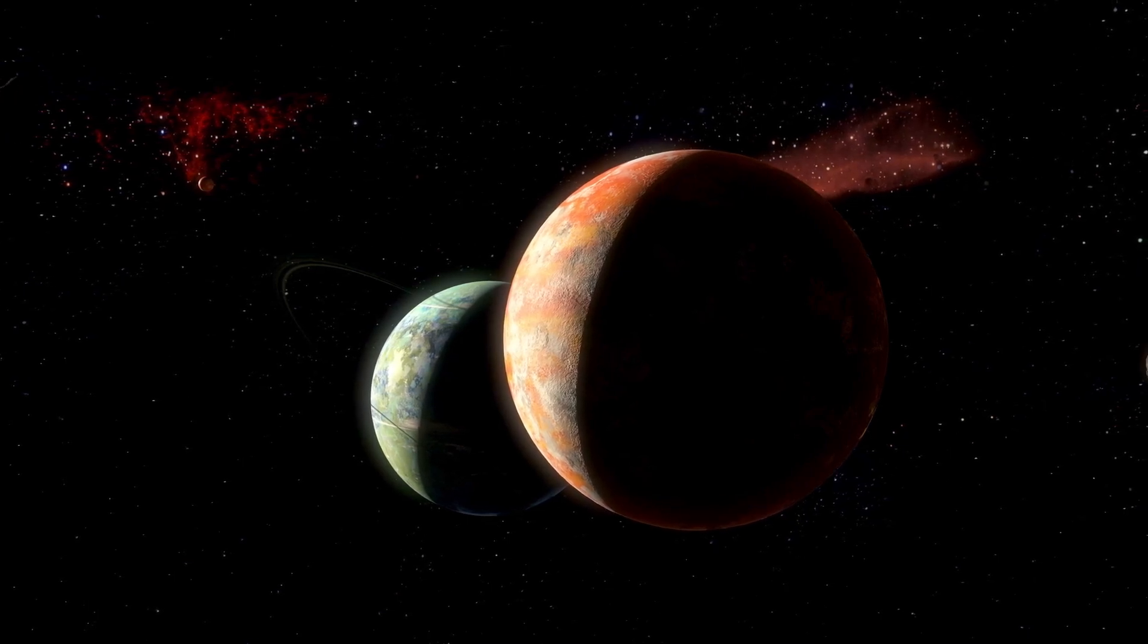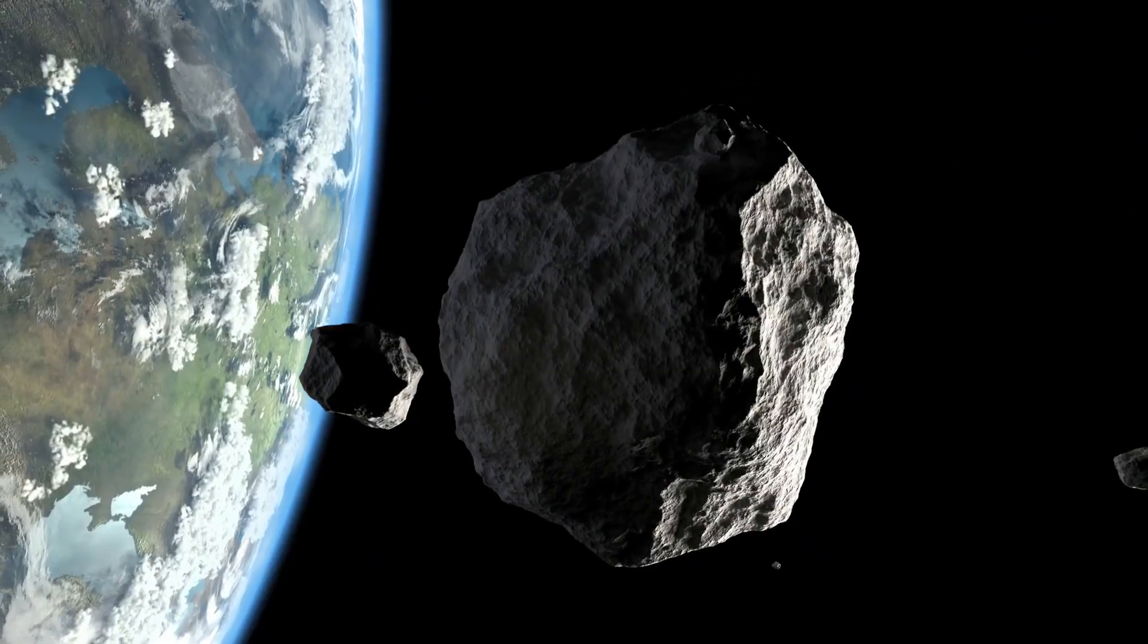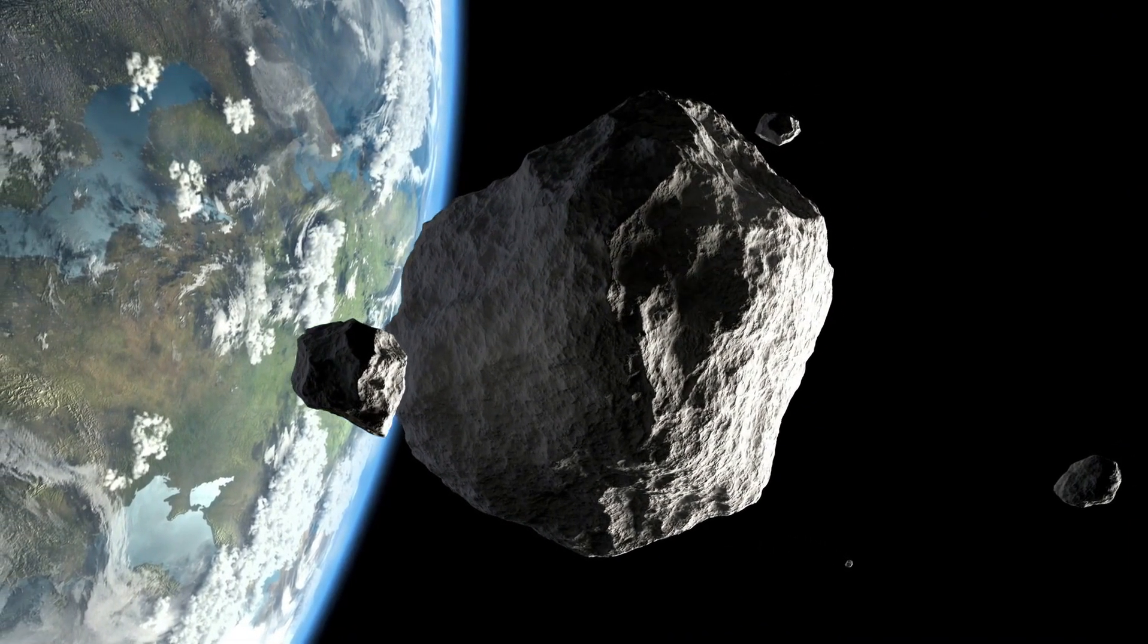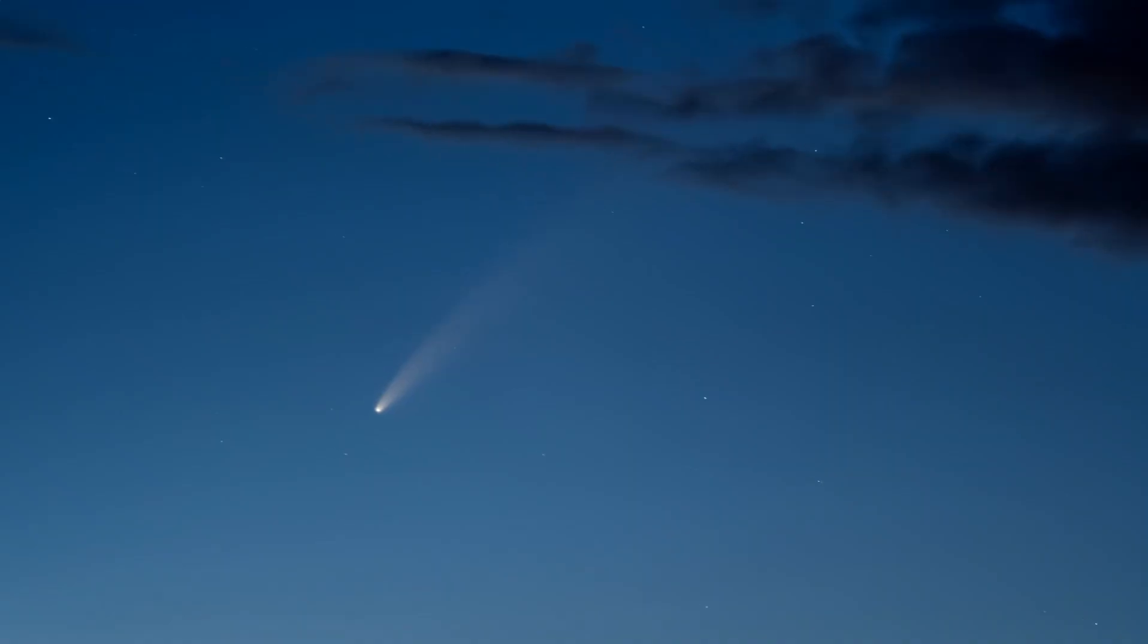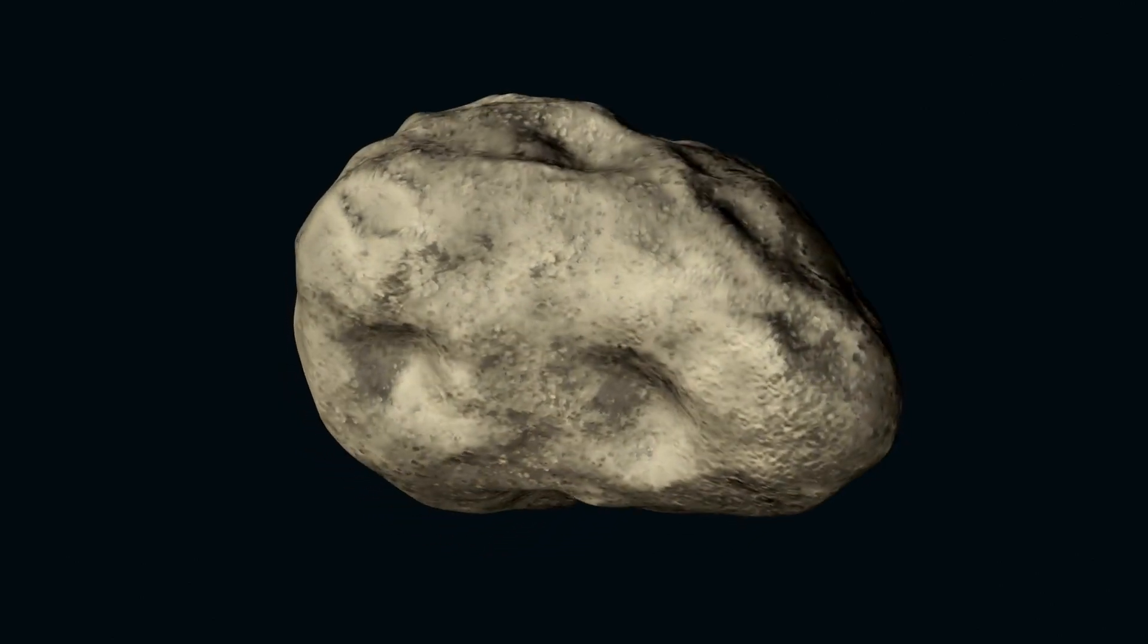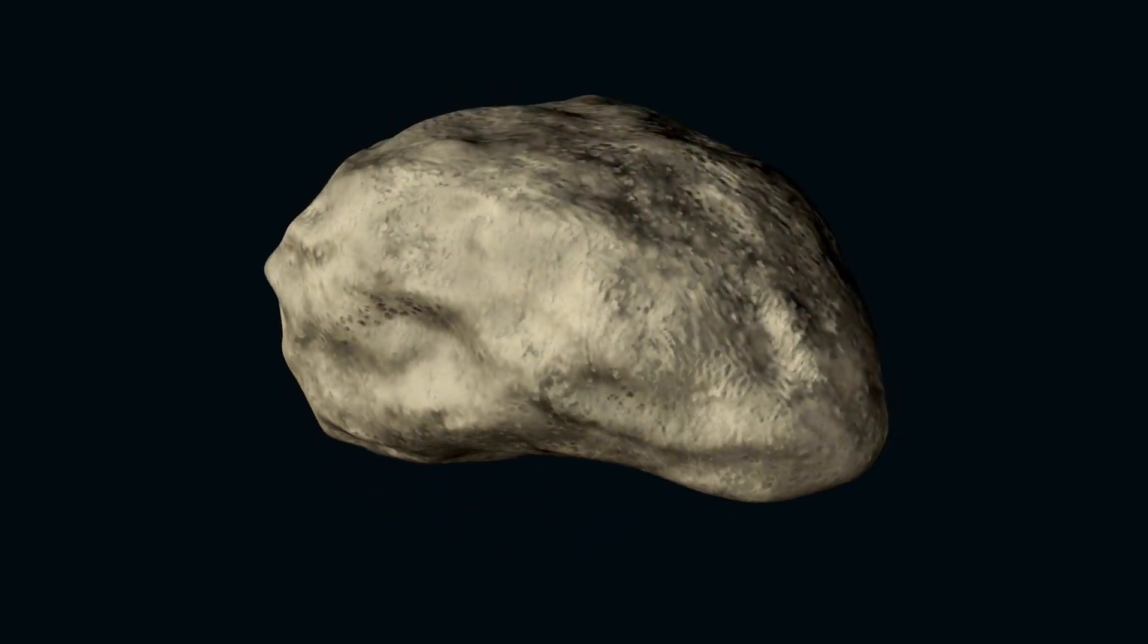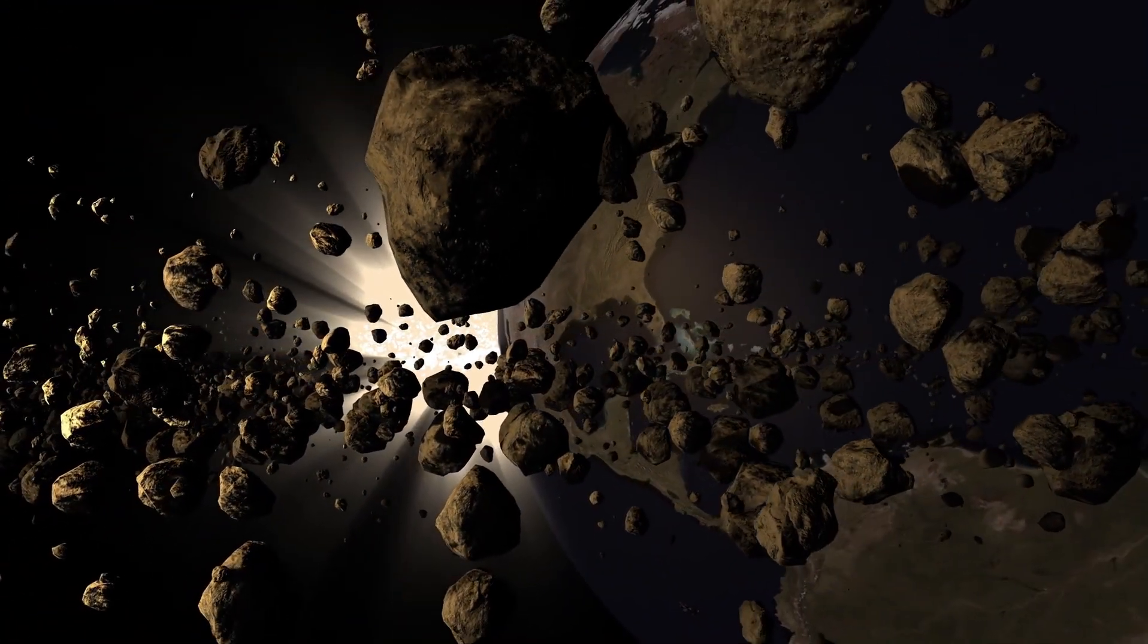Scientists believe the answer lies in a phenomenon called the Yarkovsky effect. Solar radiation exerts a small but steady force on irregularly shaped bodies, and under the right conditions, this can gradually increase their rotation speed. In G's case, its 3.5 km wide body now completes one rotation every two hours, the upper limit of what an asteroid can endure. This rapid rotation generates centrifugal forces that are stronger than the asteroid's gravity, causing loose material to be ejected into space.